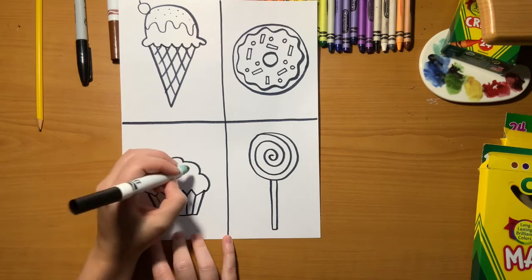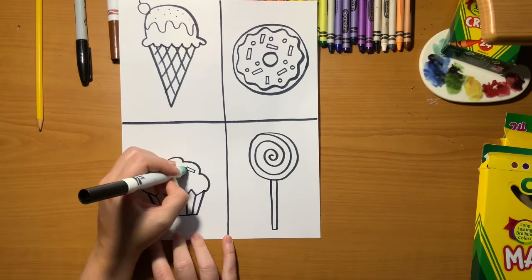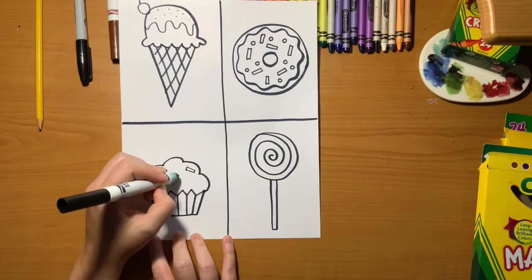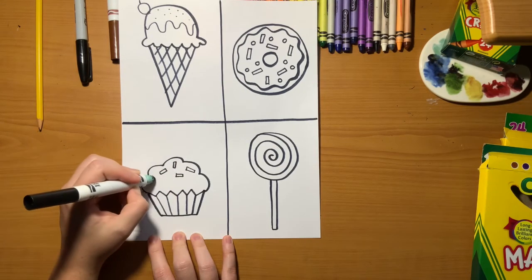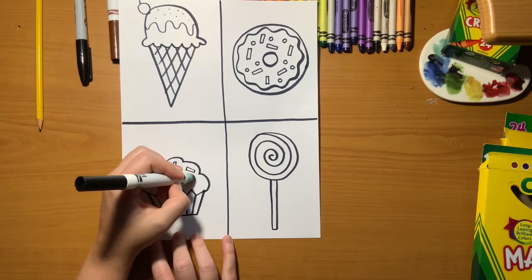Then you can add sprinkles. You can do tiny little ovals, tiny little rectangles, tiny little circles, tiny little hearts or stars or triangles, any shapes that you want your sprinkles to be.